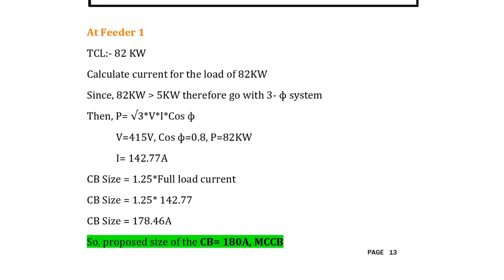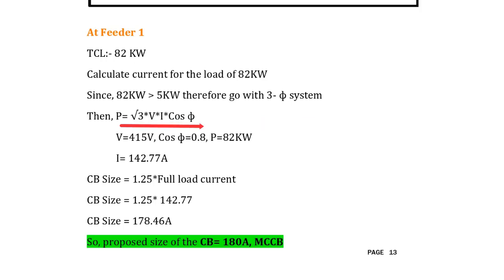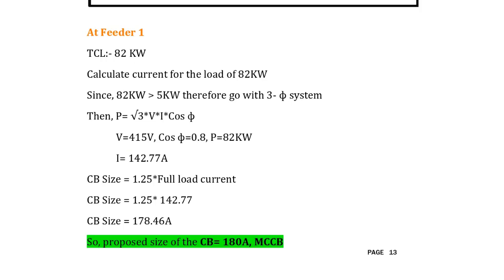At Feeder 1 the load is 82 kilowatts. For the circuit breaker size we need the full load current. Since 82 kW is greater than 5 kW, we consider it a three-phase system. The power relation is P = √3 × V × I × cos φ, where P = 82 × 10³ watts, V = 415 volts, and cos φ = 0.8. After simplification, the full load current I = 142.77 amperes.